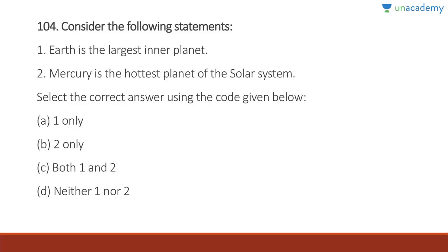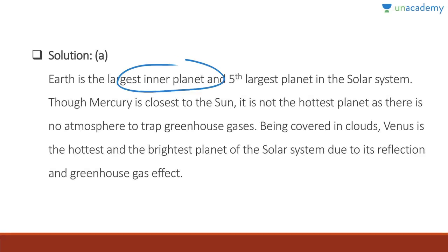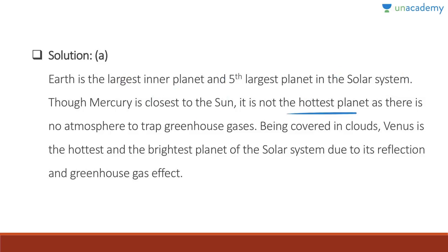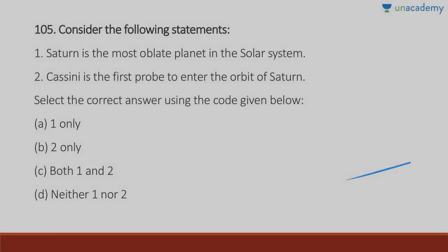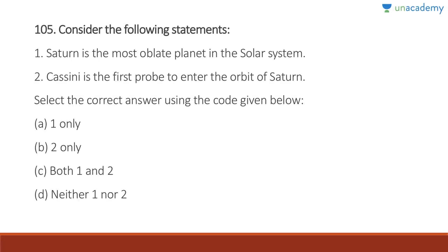Question 104: Earth is the largest inner planet — absolutely correct, and it is the fifth largest planet in the solar system. Mercury is the hottest planet — wrong, Venus is the hottest planet. Answer is A, one only. Though Mercury is closest to the sun, it is not the hottest planet as there is no atmosphere to trap greenhouse gases. Being covered in clouds, Venus is the hottest and brightest planet due to reflection and the greenhouse gas effect.